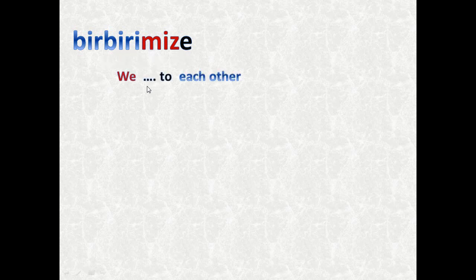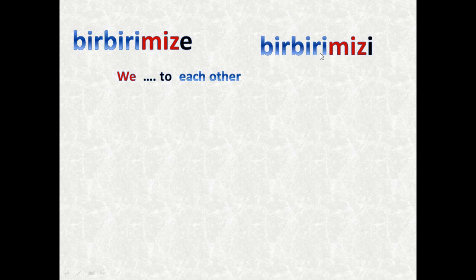The word 'birbiri' means 'each other' but it needs to be used in conjugated form. Here we have 'birbirimize' which means we do something to each other. This 'e' ending gives the meaning of 'to' or 'at' depending on the verb — so here there is an influence. We also have a suffix form meaning 'we blah blah each other' where there is an effect of one on another.